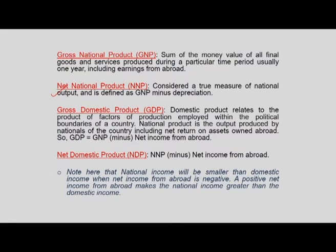Net national product, NNP, is considered a true measure of national output and is simply defined as GNP minus depreciation, also referred to as capital consumption allowances. Depreciation is deducted from GNP to arrive at NNP since capital stock wears out in the process of production — the amount of capital equaling depreciation goes out of the production process. Note the difference between gross national product and gross domestic product: estimating domestic product is also extremely important for growth assessments.